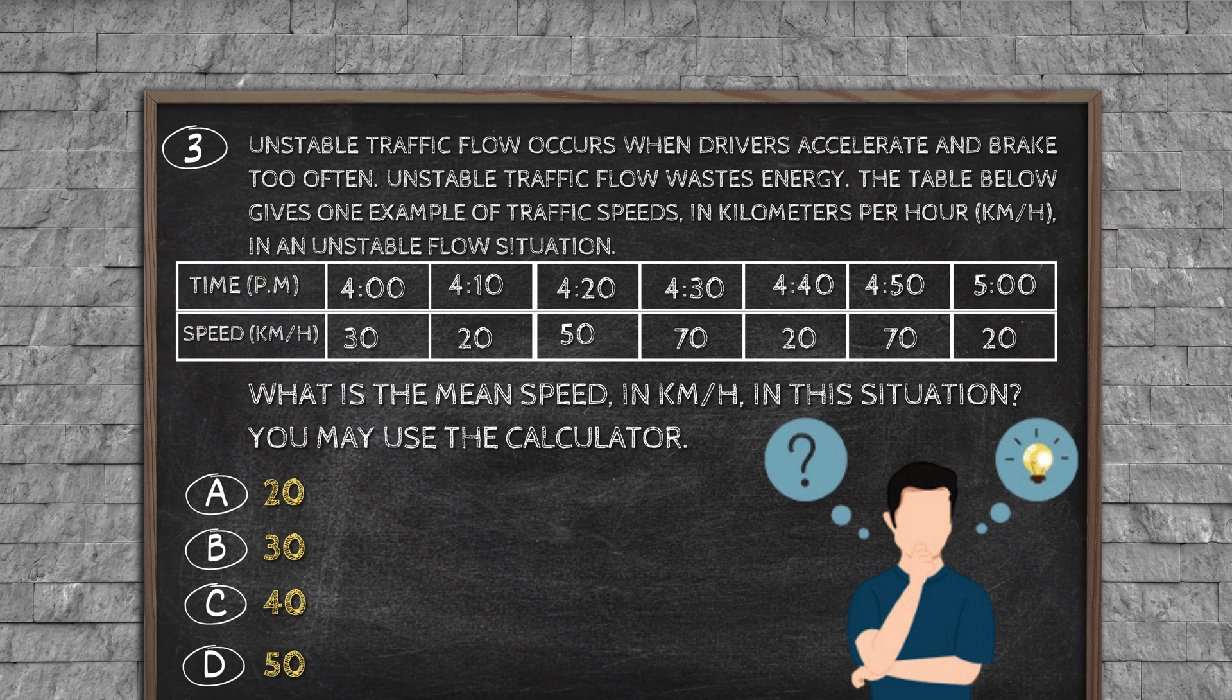Question number three: Unstable traffic flow occurs when drivers accelerate and brake too often. Unstable traffic flow wastes energy. The table below gives one example of traffic speeds in kilometers per hour (km/h) in an unstable flow situation. Time: 4:00 PM, 4:10, 4:20, 4:30, 4:40, 4:50, 5:00. Speed (km/h): 30, 20, 50, 70, 20, 70, 20. What is the mean speed in km/h in this situation? You may use the calculator. Option A: 20, option B: 30, option C: 40, option D: 50.